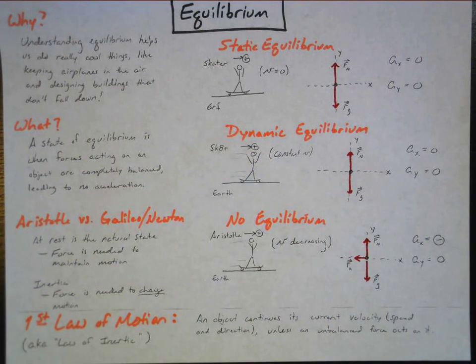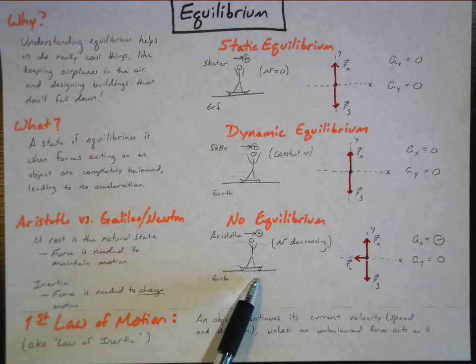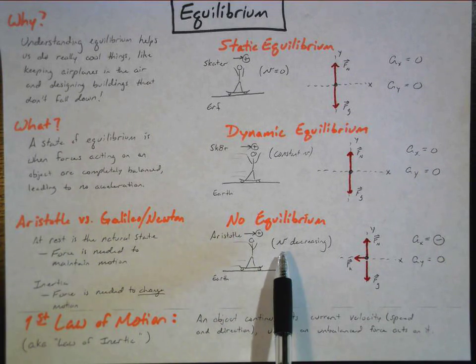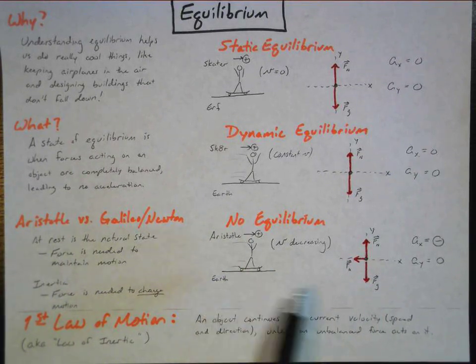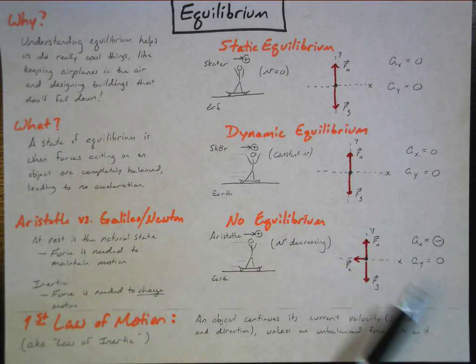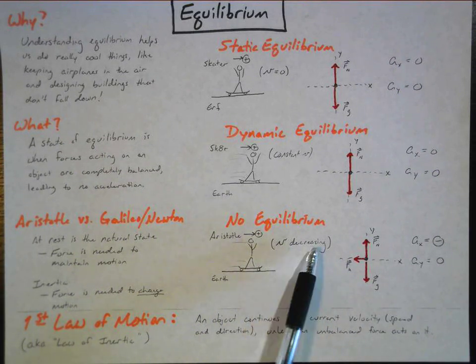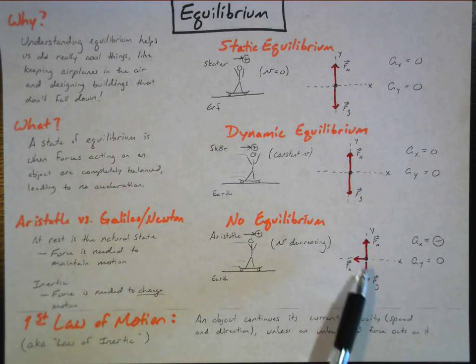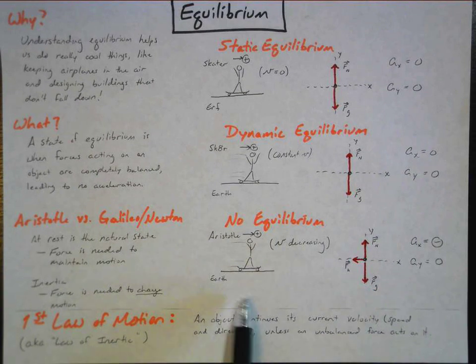What about situations where the forces are not balanced? Let's look at this. No equilibrium. All right. So we put Aristotle on a skateboard, teach him a lesson. And positives to the right. Skateboards on Earth. And we do a free body diagram of Aristotle here. And we're going to say, well, he's slowing down. Velocity is decreasing. All right. What are the forces? Earth is pulling Aristotle down. Force of gravity. Earth is providing an upward support force. Normal force.